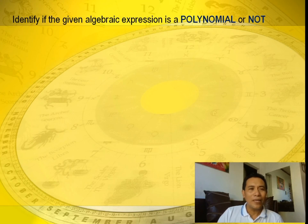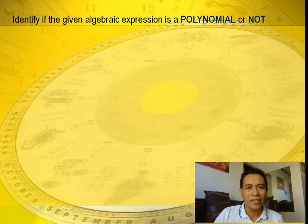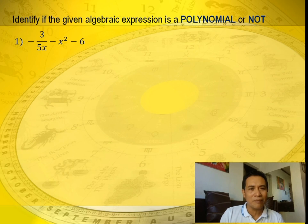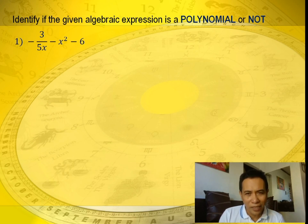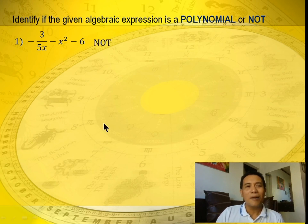Now let's identify if the given algebraic expression is a polynomial or not. Number 1: negative 3 over 5x minus x squared minus 6. Is it a polynomial or not? Not a polynomial, because the variable x is in the denominator.